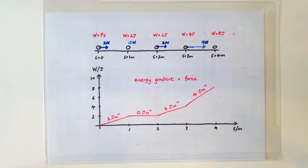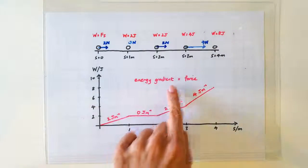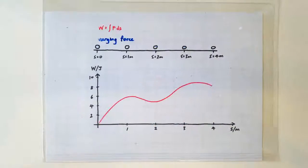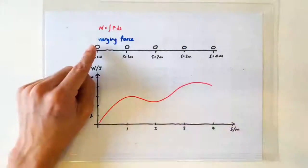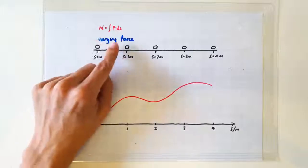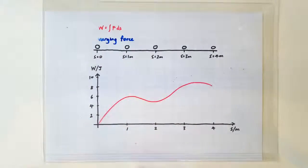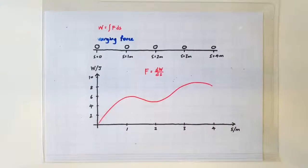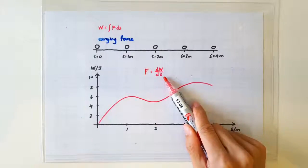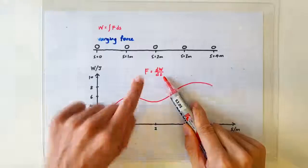See, the energy gradient corresponds to the force. In general, we can have a continuously varying force, so the energy displacement graph can be any curve. So the instantaneous gradient at any point tells us the force at that point.